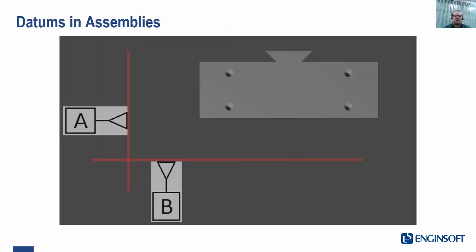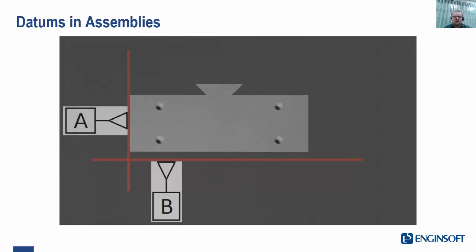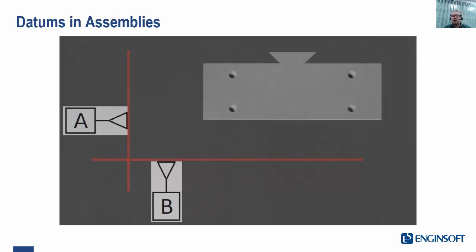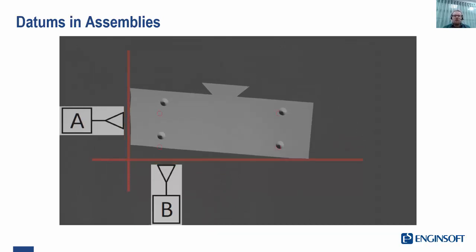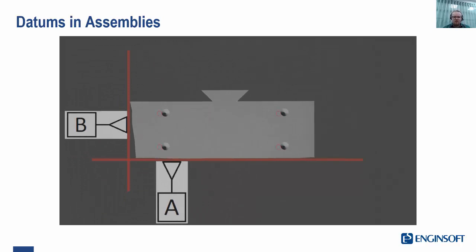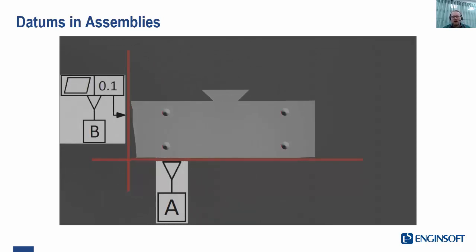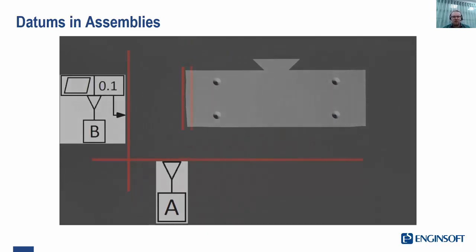OK, so how does this work when we have our part? Let's say we have a primary datum A and a secondary datum B. We want to first face up our part onto datum A and then onto datum B. This is really important because if we do it the other way around, we might see different results when we have actual variation applied to our part.